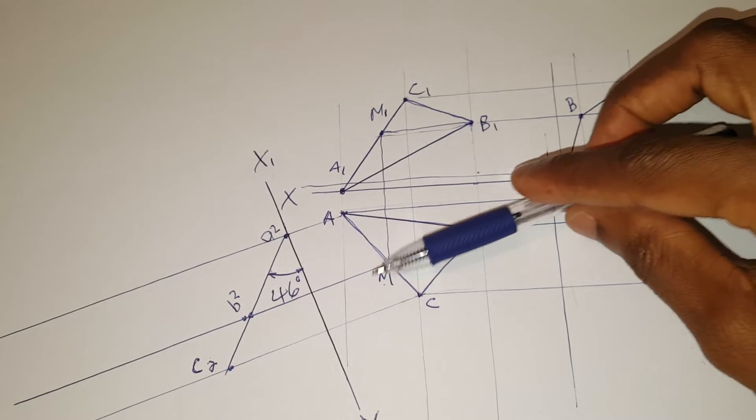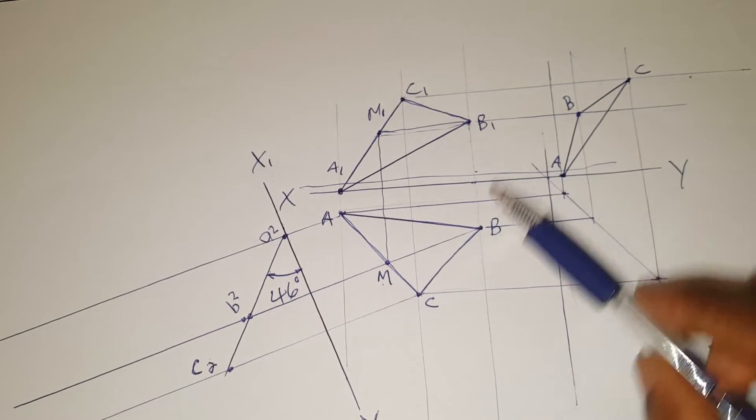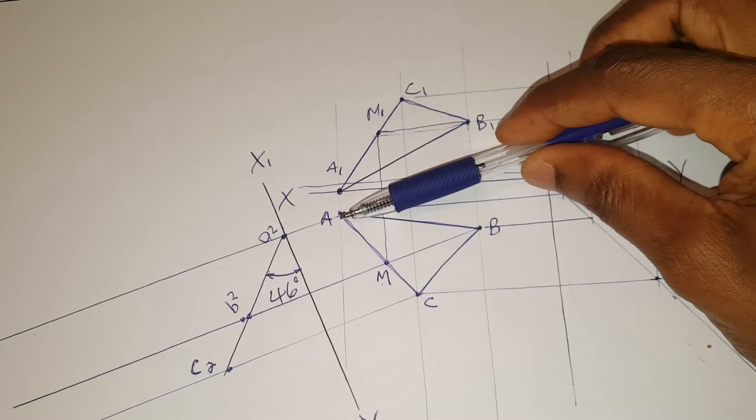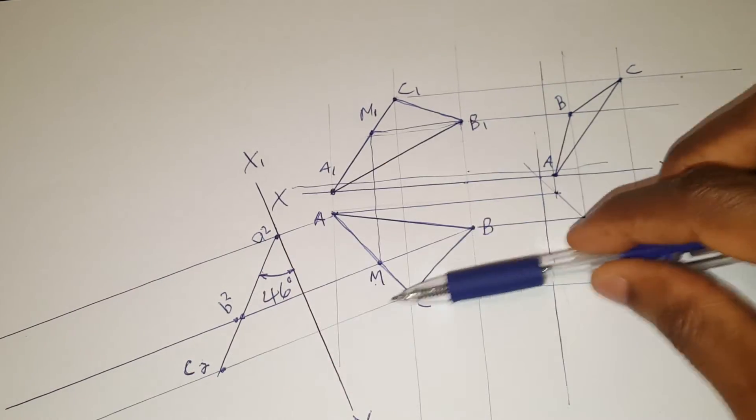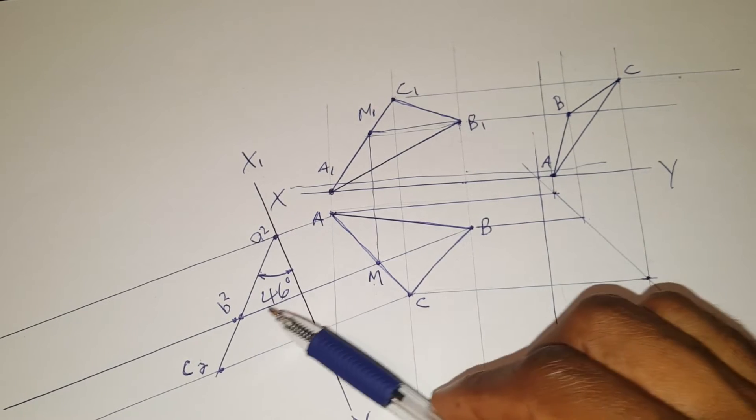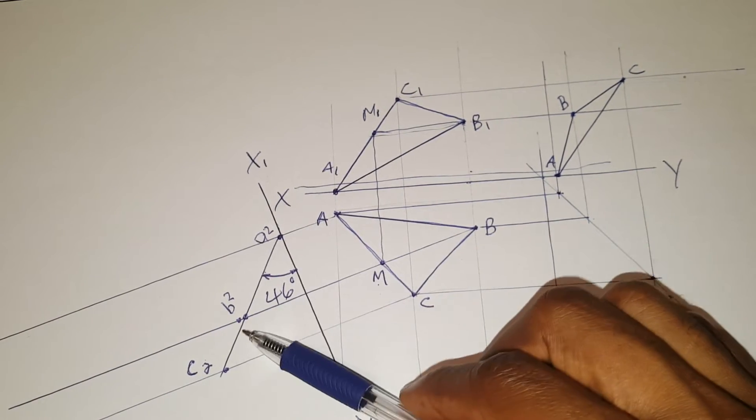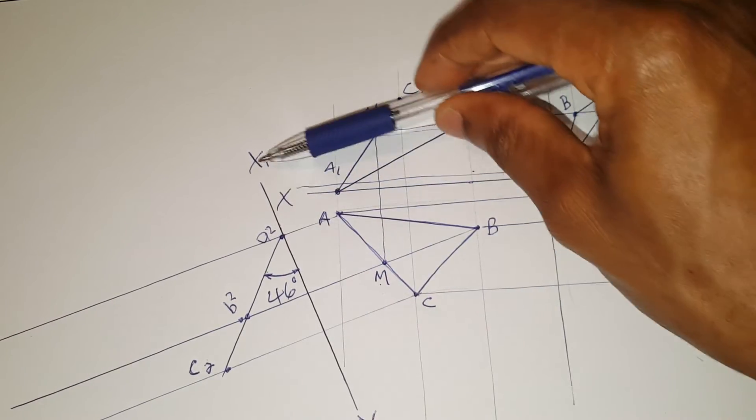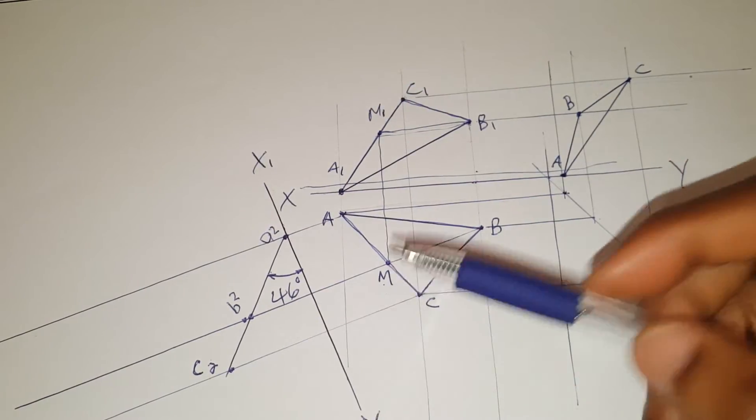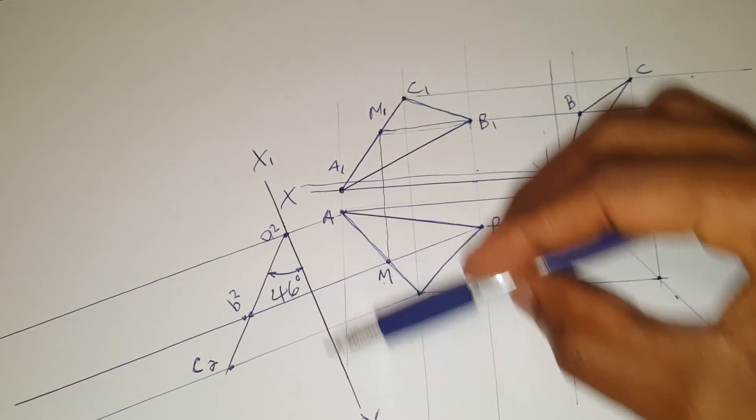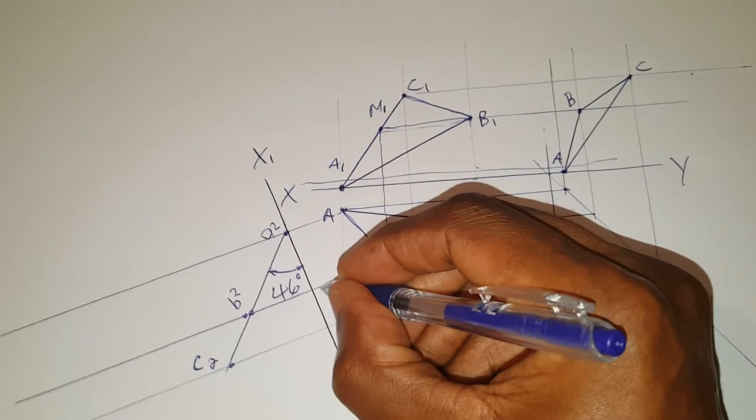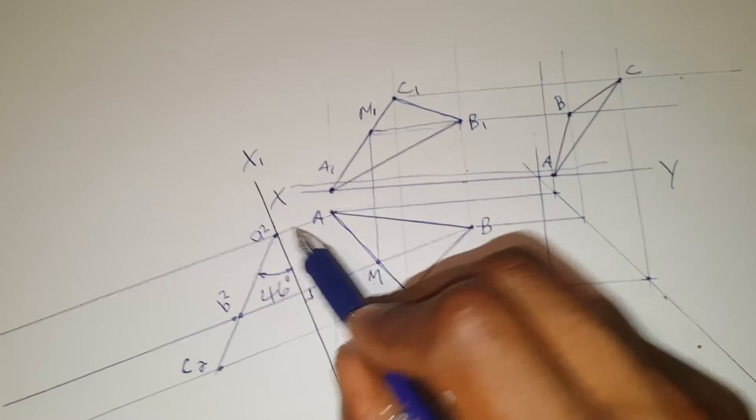My next step is to draw a parallel line relative to this line at point A and point C. Once I have done that, to get the edge view, I then draw this X1, Y1 perpendicular, at right angle to these lines.